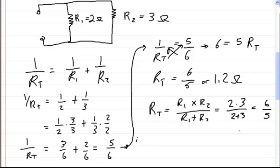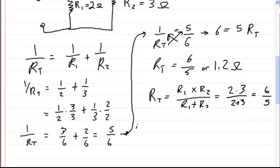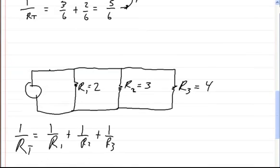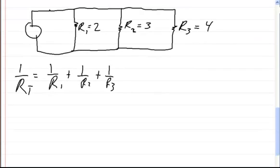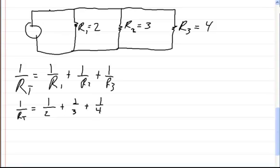This method works maybe a little bit quicker. Let's go on to the second problem. In this one, there are three resistors, and I'm going to solve it both ways again. Here's the first part: 1 over RT equals 1 over 2 plus 1 over 3 plus 1 over 4.